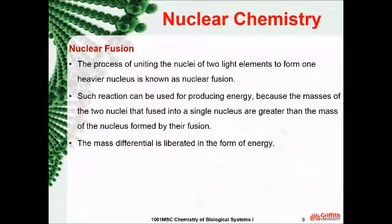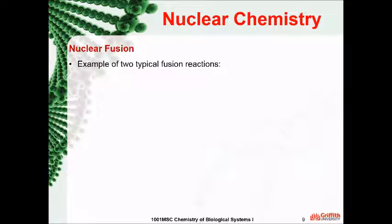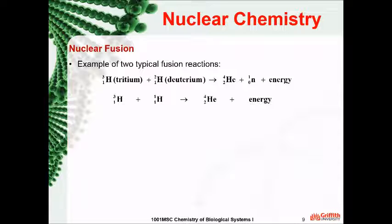The mass differential is liberated in the form of energy. Let's see an example. Tritium plus deuterium gives an alpha particle plus a neutron plus energy. Another example: Tritium plus hydrogen gives a helium nucleus plus energy.